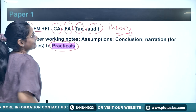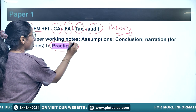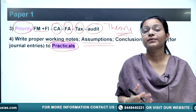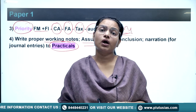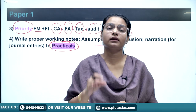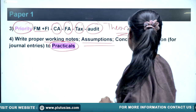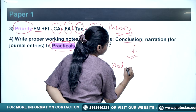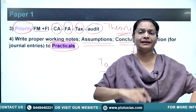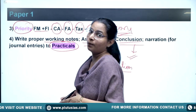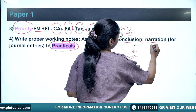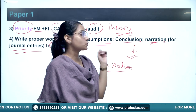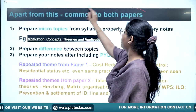For practical questions, make proper working notes and give clear-cut assumptions related to the topic. For example, in a capital budgeting question, if IRR or cost of capital is asked, mention the assumptions made. Give a clear conclusion. For detailed taxation solutions you may leave them, and for lengthy final accounts questions, you can skip provisions or certain numericals as they take more time. Also provide proper narration for journal entries.